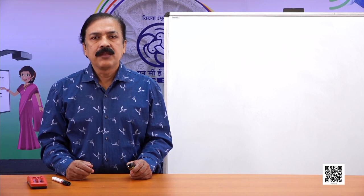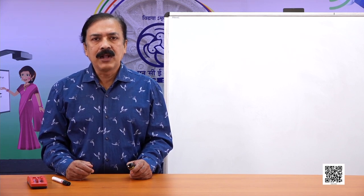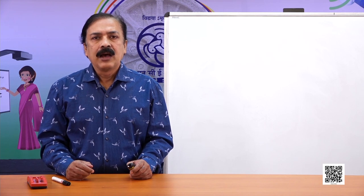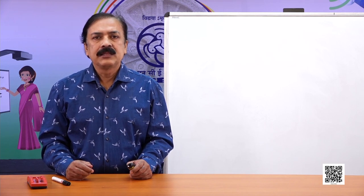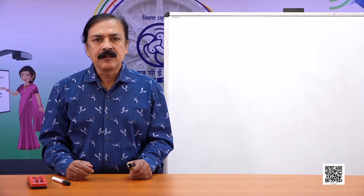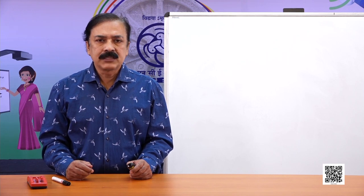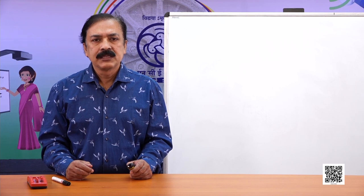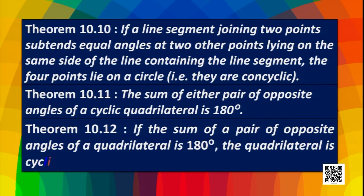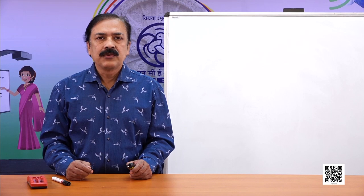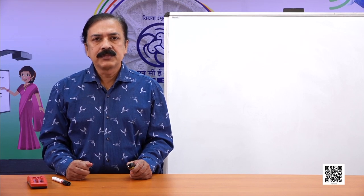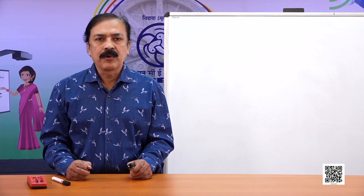A cyclic quadrilateral is one whose vertices lie on a circle. The converse states: if the sum of a pair of opposite angles of a quadrilateral is 180 degrees, the quadrilateral is cyclic. Based on these properties we have solved many problems, and today we are going to solve some more.